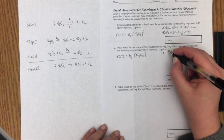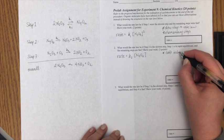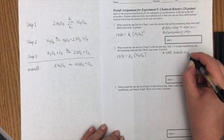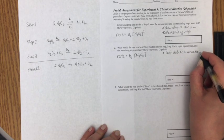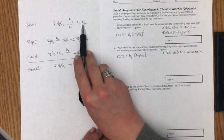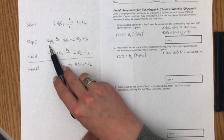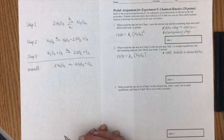And one rule is that we're not allowed to include intermediates in our final expression. An intermediate is something that is formed and then consumed during the course of the reaction. And we can see here that N4O10 is first formed in that first step and then it's consumed in the second step. So we're not allowed to include intermediates in the expression.